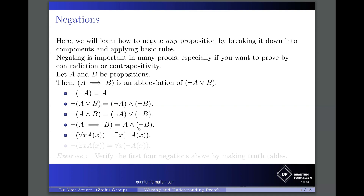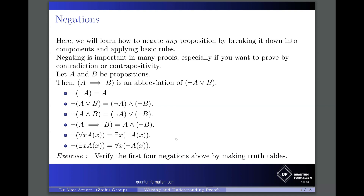Finally, the negation of 'for all x, A(x) holds' is 'there exists x for which A(x) doesn't hold.' This will look familiar — to disprove 'for all x, A(x) holds,' you need to find a counterexample, which is the x for which the negation of A holds. Also, the negation of 'there exists x for which A(x) holds' is 'for all x, A(x) doesn't hold.' The first four negation rules are left as an exercise to verify by making truth tables.